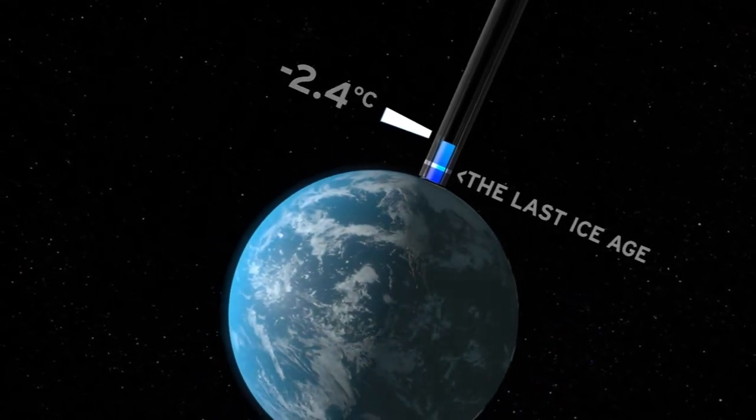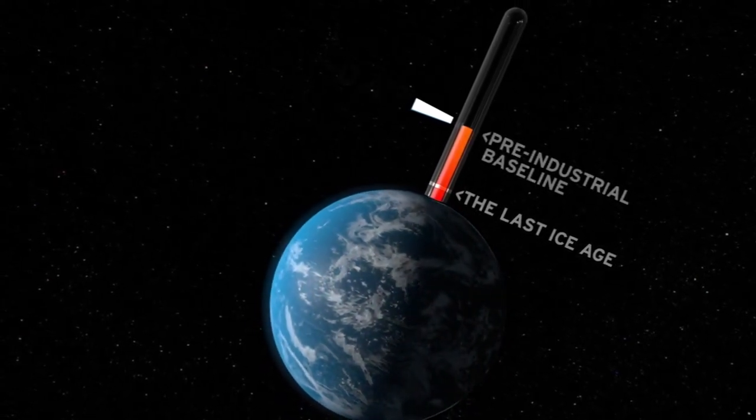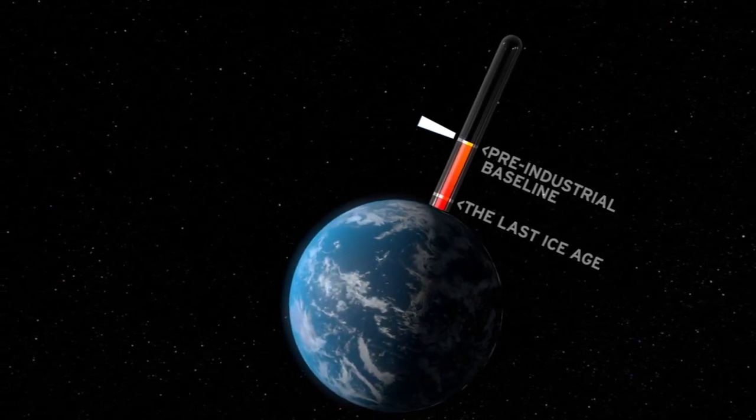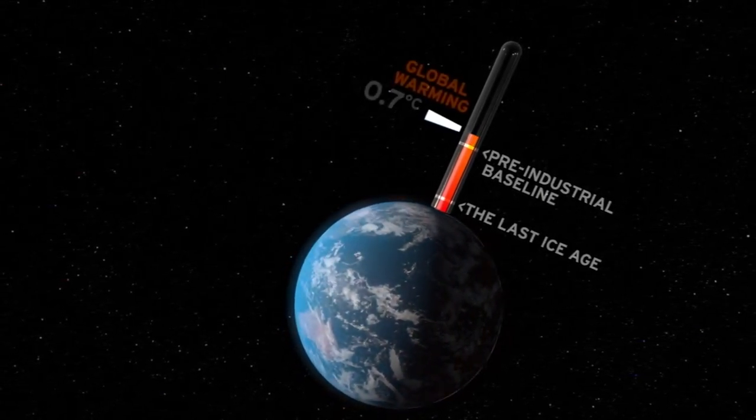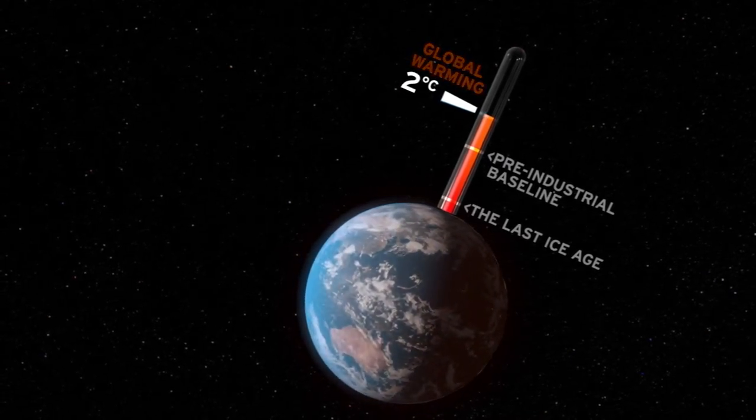averaged was enough to go from the ice age to today and raised sea level about 400 feet. If you put this in units of ice age changes, we're going to be doing close, not quite, but almost half an ice age going forward to 2 Celsius.